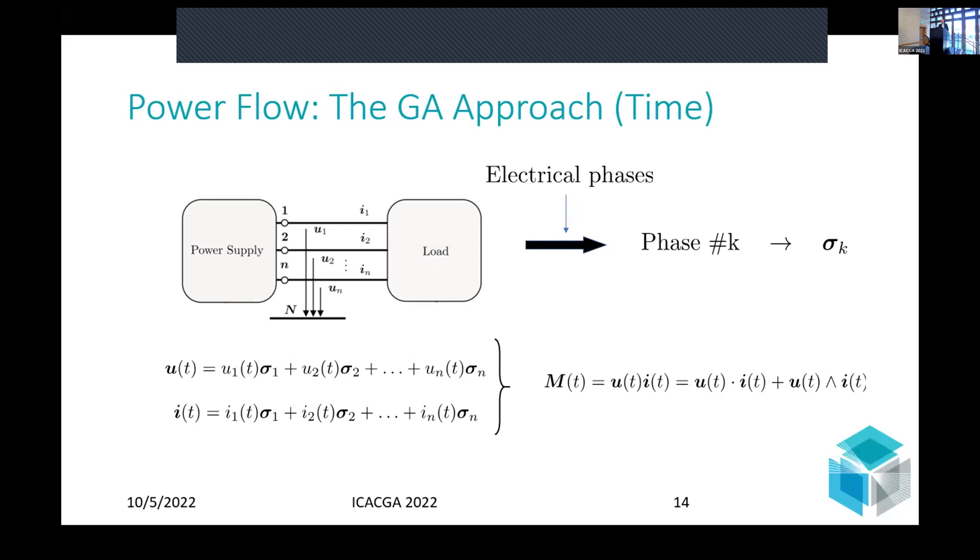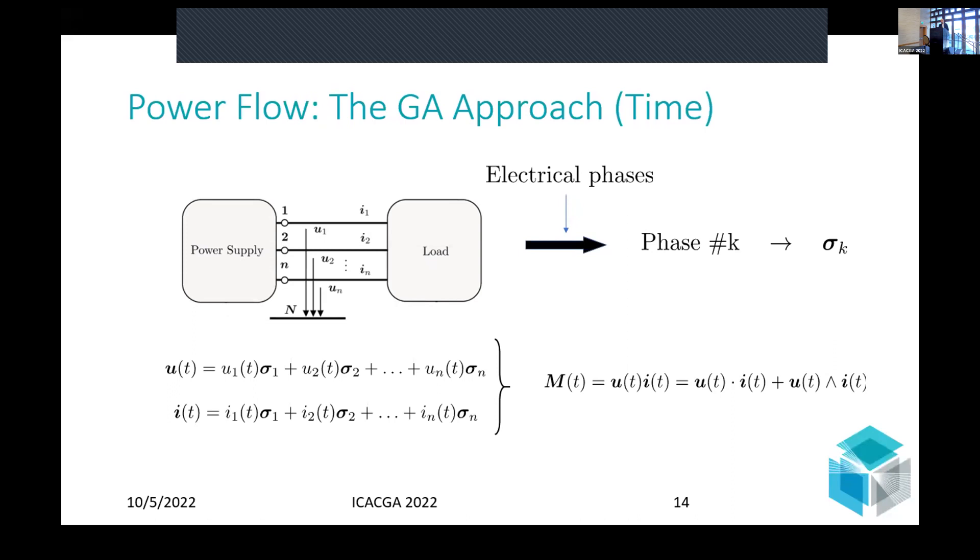Here are the conclusions. The use of complex algebra and Fourier basis is a source of limitation for understanding power flows and economic impacts on power grids. Geometric algebra has shed some light in this long-standing discussion over the last 120 years regarding reactive and apparent power. Finally, I consider that geometric algebra is the right approach to fully understand the internals of power systems in a simplified and comprehensive way. Thank you very much.